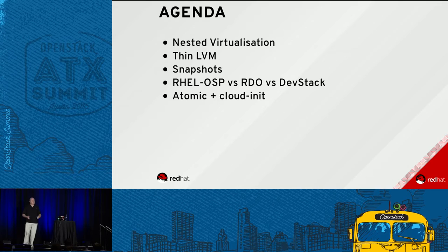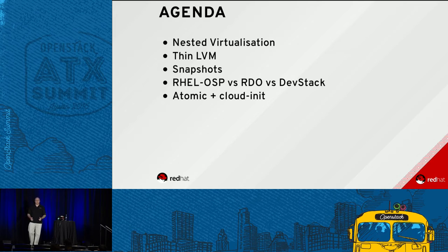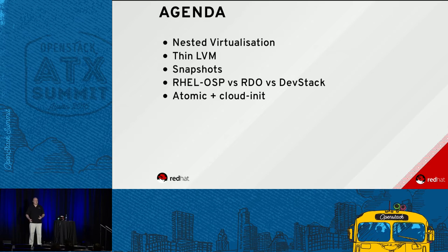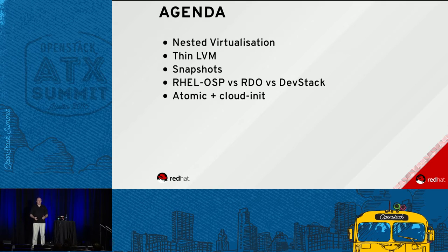Why are we doing this? Why am I interested in this area? What are we trying to achieve? There's a little bit of demo, a little bit of walkthrough. Please feel free to make this interactive - they've asked that you use the microphones so they can record this. I'm happy to take questions at any point. Key things we'll cover: nested virtualization, how to use thin LVM, snapshotting, Red Hat OpenStack / RDO versus DevStack, and if we've got time, using Atomic for rapidly standing up Docker and Kubernetes environments.